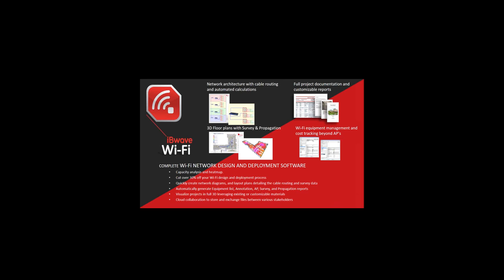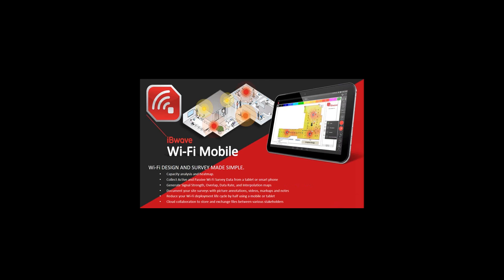Our project metrics show that with iBWave you reduce the full project lifecycle — planning, survey, design, and installation support — by 30%, also reducing errors during installation. The Wi-Fi Mobile app allows you to go to the field, collect all survey data, perform a walk-test, generate coverage maps — signal level, channel interference, noise floor — and now also perform a capacity analysis directly in the field.